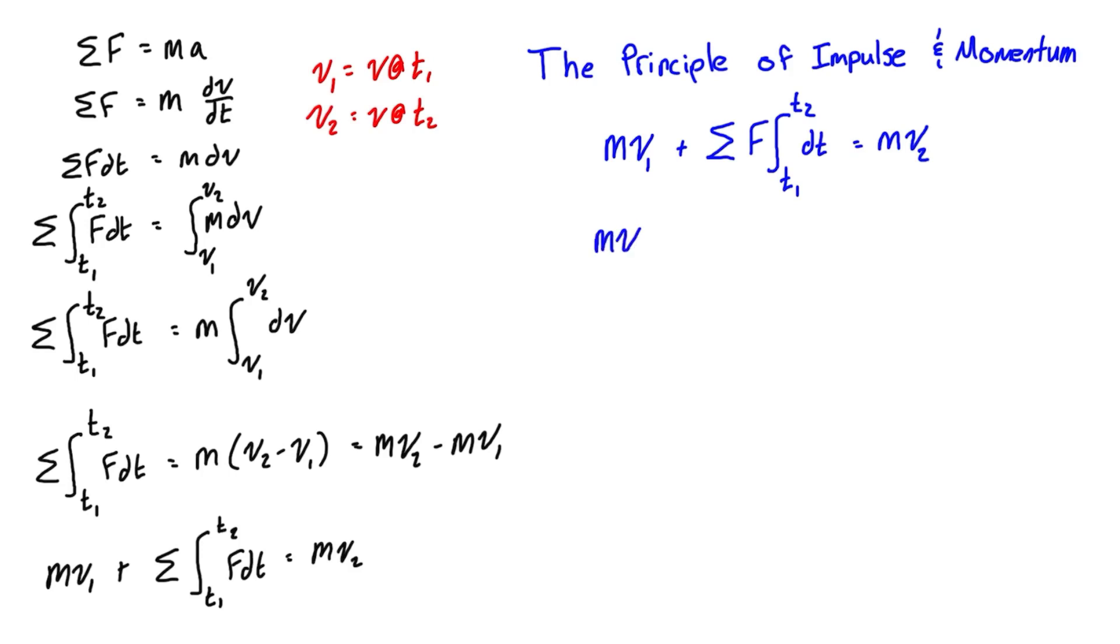We have mv1 plus sum of force - this is a really easy integral to do, it's just t2 minus t1 - is equal to mv2. We can rewrite t2 minus t1 as delta t, so we have mv1 plus the sum of F delta t is equal to mv2.